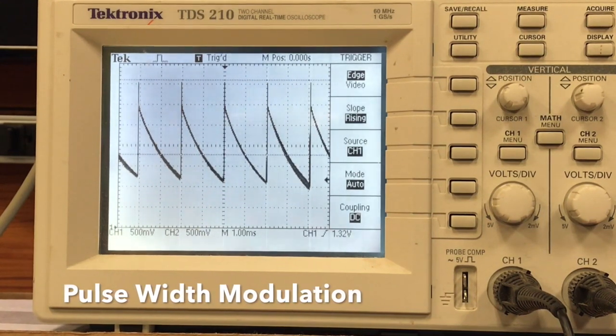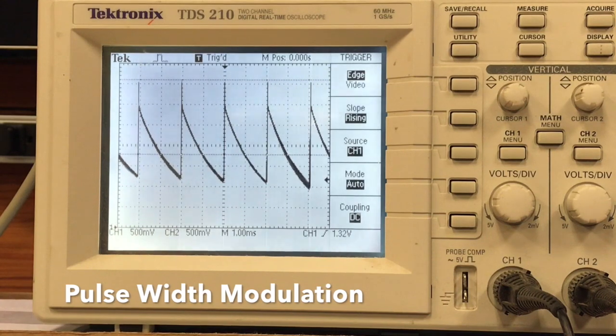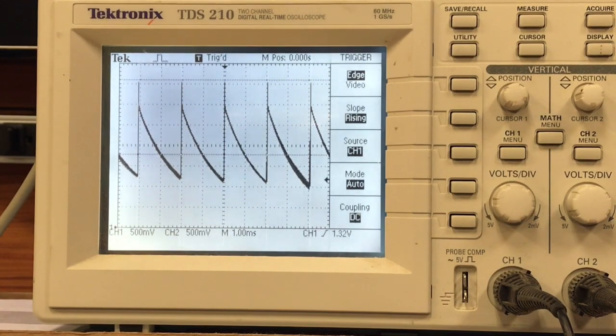If we don't turn it on very long each time, it's dim. If we turn it on all the time, it's bright.